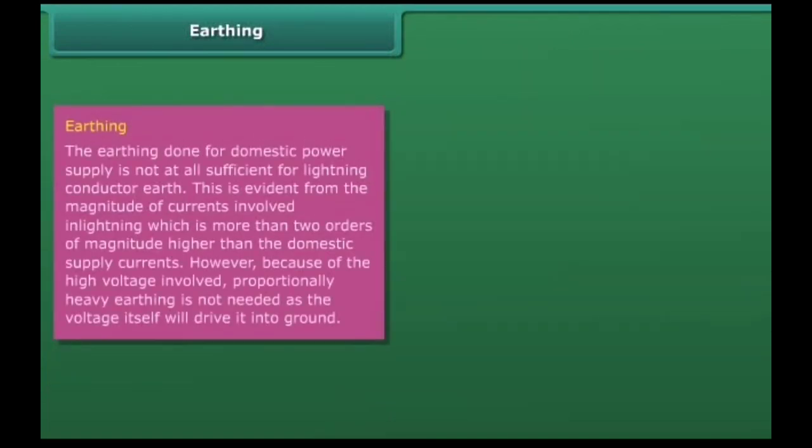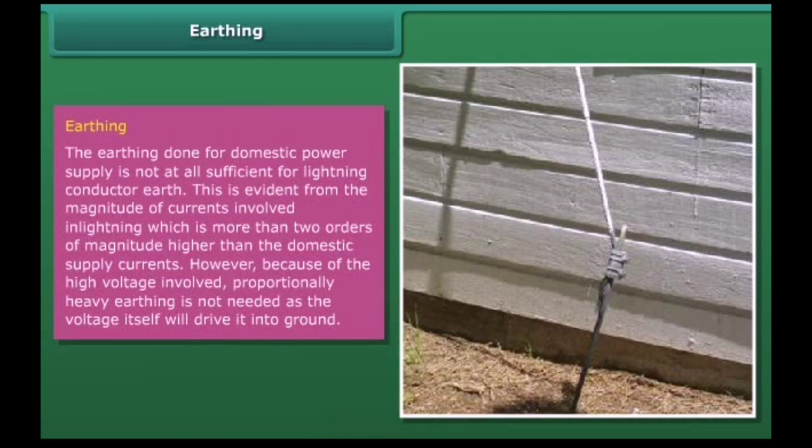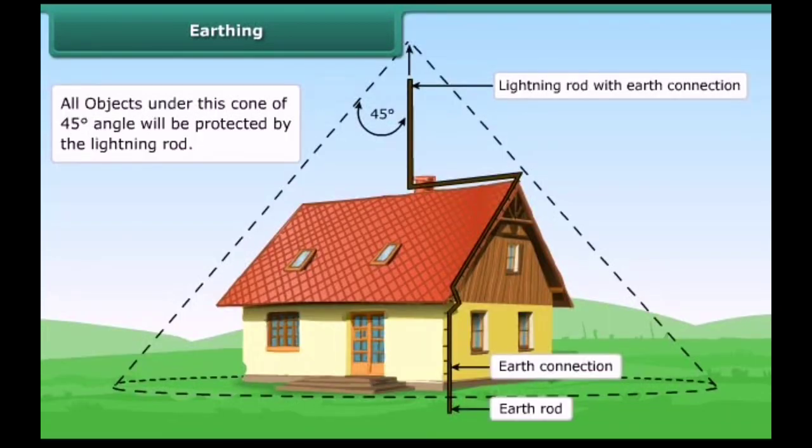Earthing. The earthing done for domestic power supply is not at all sufficient for lightning conductor earth. This is evident from the magnitude of currents involved in lightning, which is more than two orders of magnitude higher than the domestic supply currents. However, because of the high voltage involved, proportionally heavy earthing is not needed as the voltage itself will drive it into ground. Cone of protection: this is a term used to describe the volume of protection offered, and it provides a simple graphical tool for installing a lightning conductor protection system. Arrangement of a lightning rod showing the cone of protection is given in the figure.